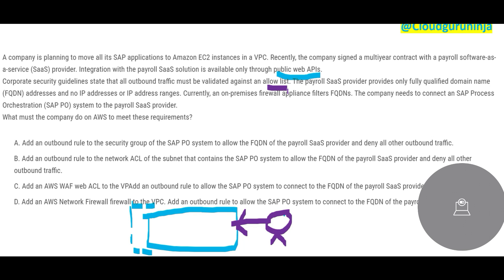The payroll system provides one Fully Qualified Domain Name, or FQDN, address. FQDN is a hierarchical name given to a device — like mobile phones or network routers on the internet. They also have a firewall appliance that is filtering FQDNs. So we need to tell the firewall: please allow this FQDN.